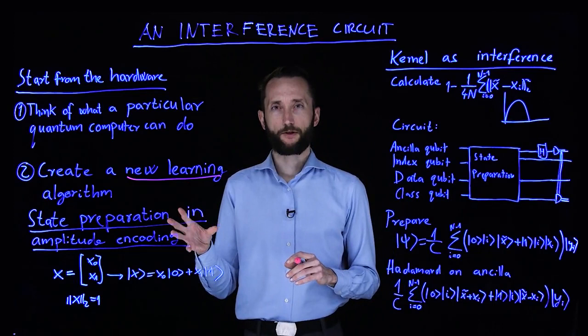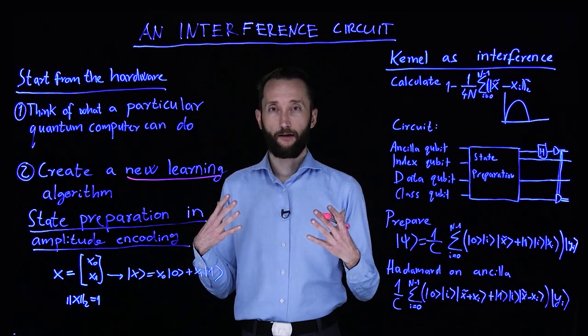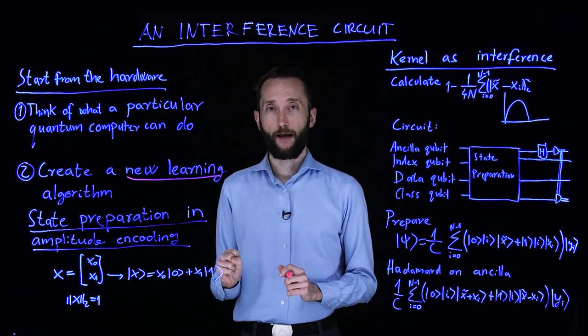So in the first two learning protocols that we looked at, we talked about how you can map a problem to an Ising model. In other words, we used a kind of Hamiltonian encoding. In this case we are going to use the amplitude encoding.